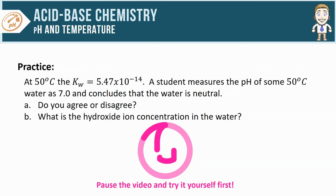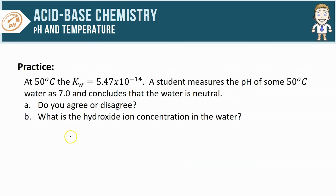Let's take a look at how we would answer this question. First of all, my temperature is raised so my K_w value is increased to 5.47 × 10^-14. The pH comes out as 7, so the student concludes that the water is neutral. First of all, for part a, we should be disagreeing.